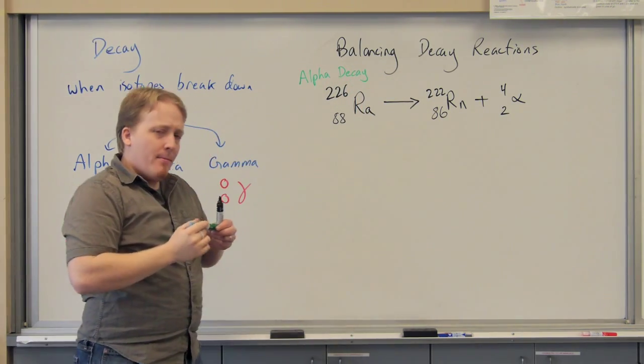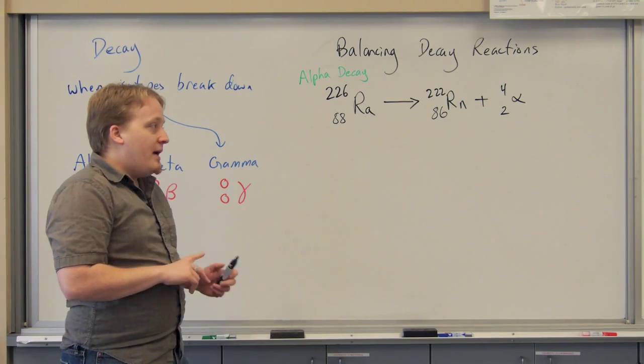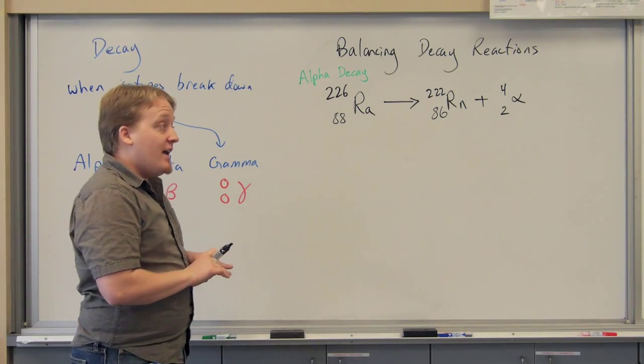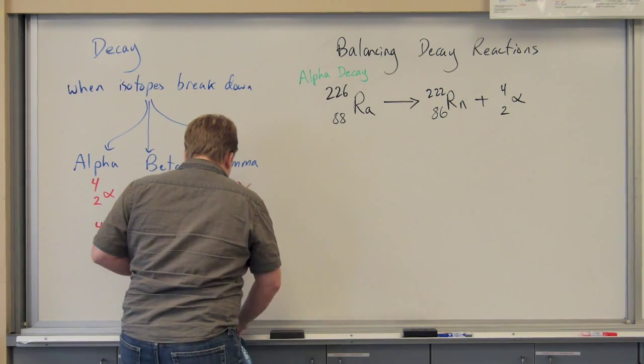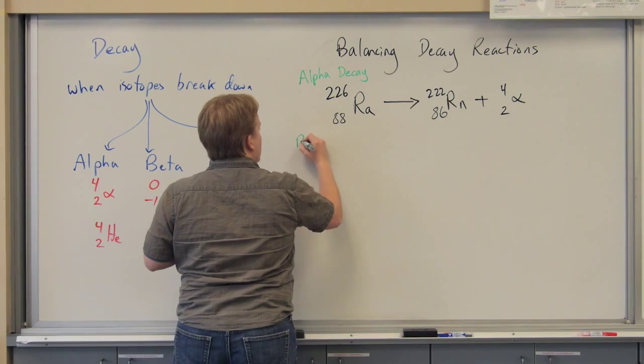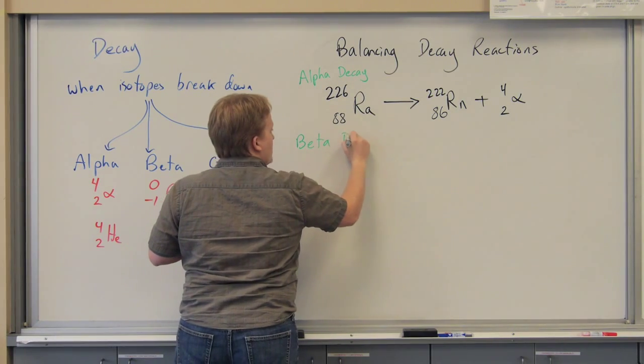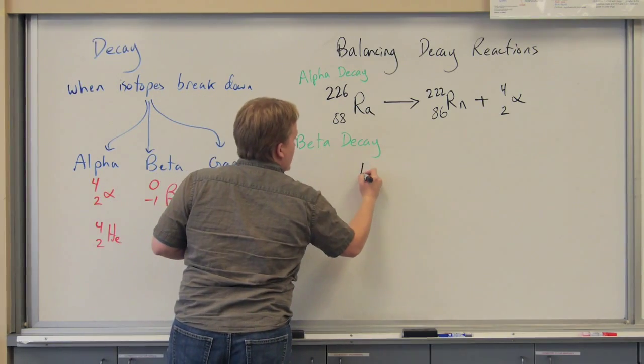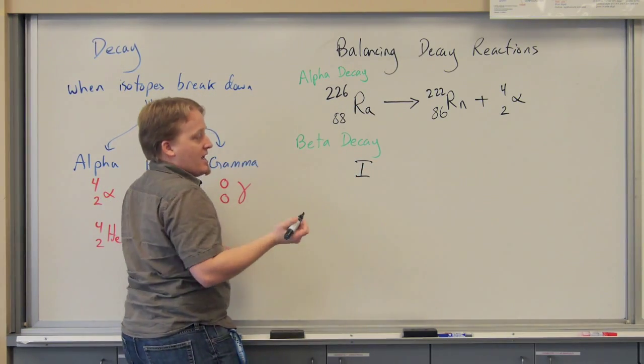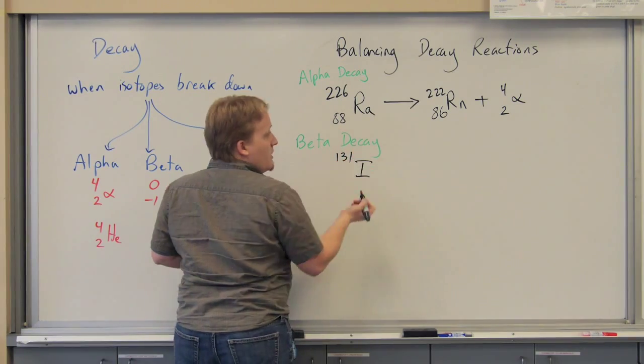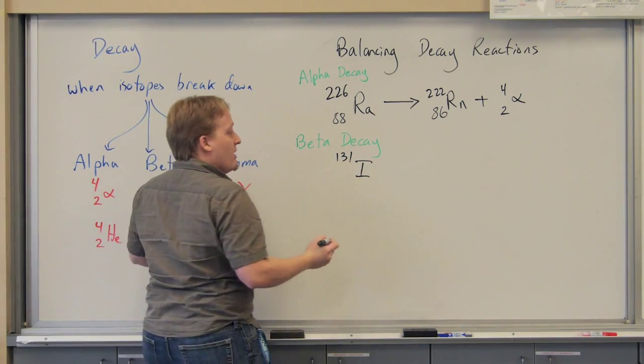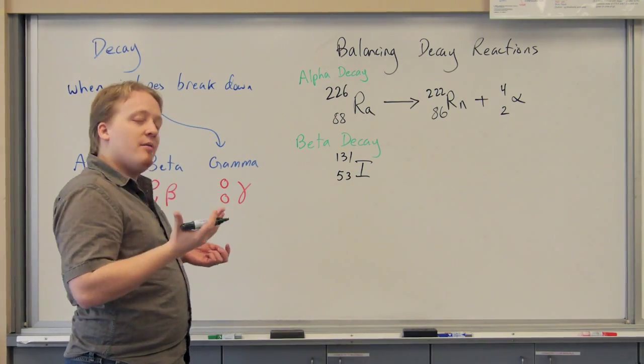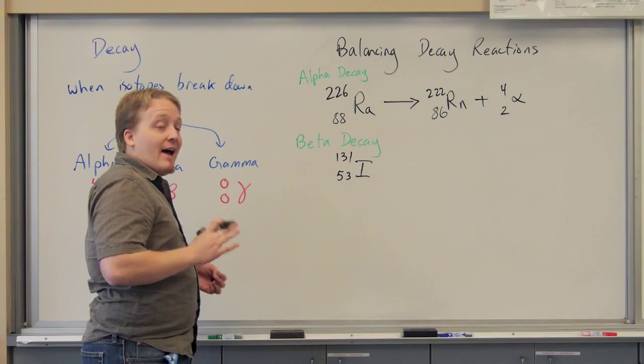Now beta decay is a little bit different. For beta decay, we're going to start with an unstable isotope of iodine. So our next one is going to be beta. This unstable isotope of I has a mass of 131, and an atomic number of 53. It should not come as a surprise. The atomic number is the same as it would be for the regular elemental atom.